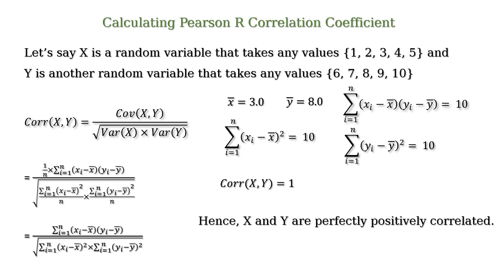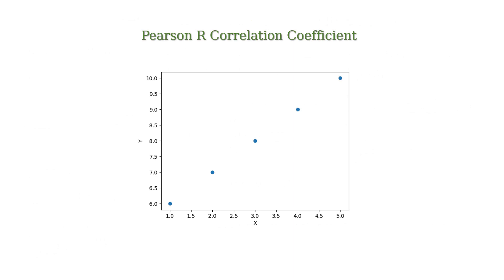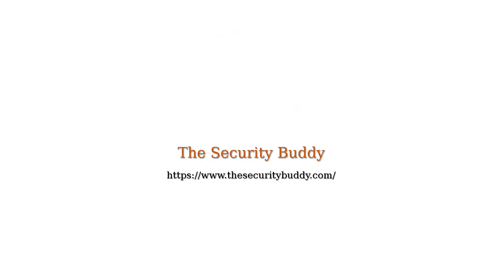At this point, if we plot a scatter plot of x and y, we can see the relationship between x and y. We can also use Python to calculate the Pearson R correlation coefficient between two random variables x and y. Interested viewers, please visit the website of Security Buddy to know more about how to use Python to calculate the Pearson R correlation coefficient between two random variables. The relevant links are provided in the description. Interested viewers who want to know more, please refer to the playlist 'Statistics for Machine Learning' or visit the website of Security Buddy.